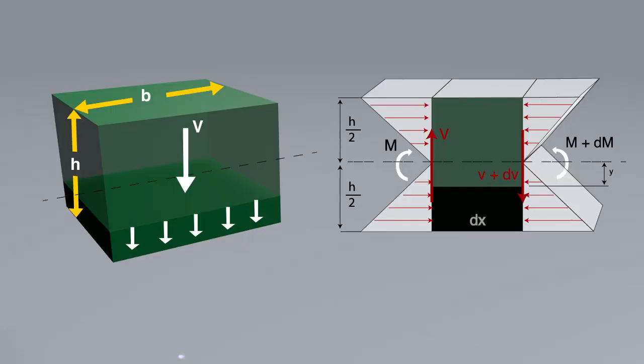Let us take two adjacent cross-sections at a distance dx apart.